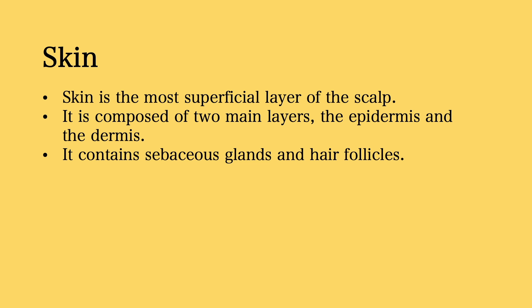The first layer is the skin, which is therefore the most superficial layer of the scalp. It is composed of two main layers: the epidermis and the dermis — layers you can find in any part of the body where skin is found. This particular layer also contains sebaceous glands and hair follicles.